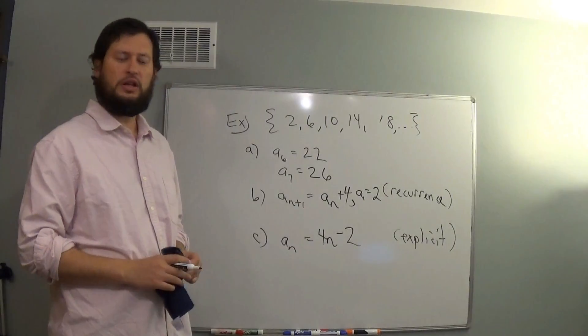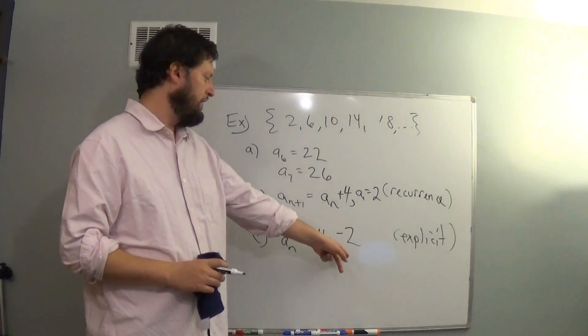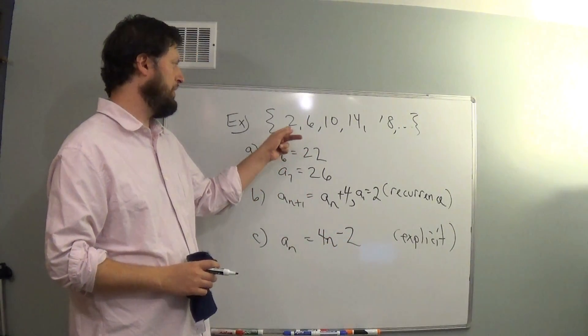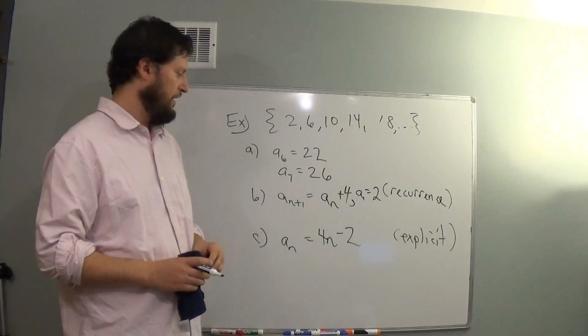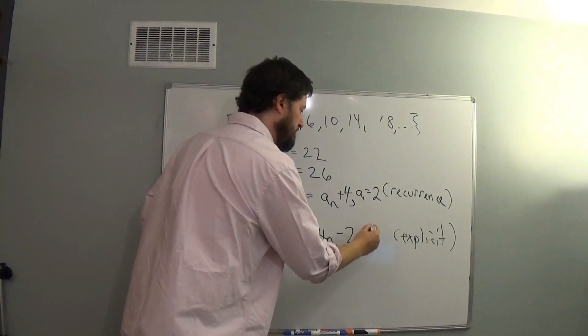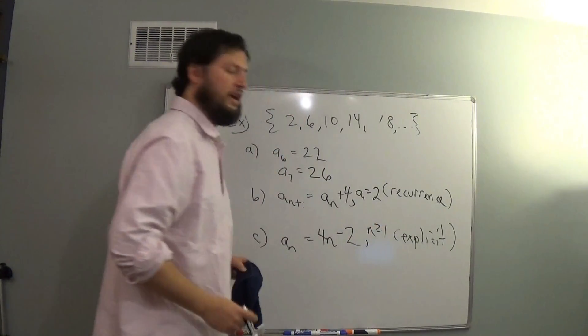We need to subtract 2. If I have 4, 8, 12, minus 2, that's going to give me 2, 6, 10, and so on and so on, starting at n equal to 1.